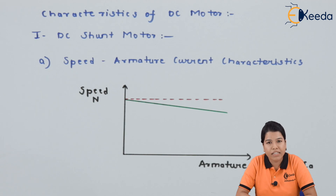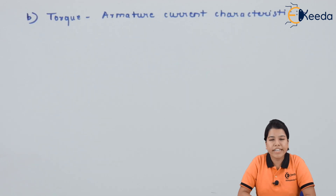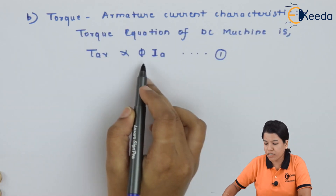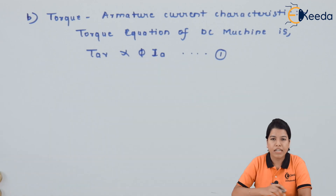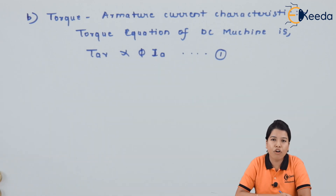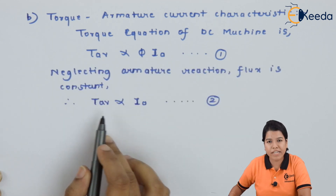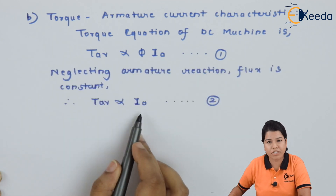Now let us study the torque versus armature current characteristic of DC shunt motor. We have already derived the equation for torque: T_avg is directly proportional to flux × armature current. If we neglect the value of armature reaction, the flux remains almost constant. Hence, for a constant value of flux, the equation is modified as: T_avg is directly proportional to armature current.